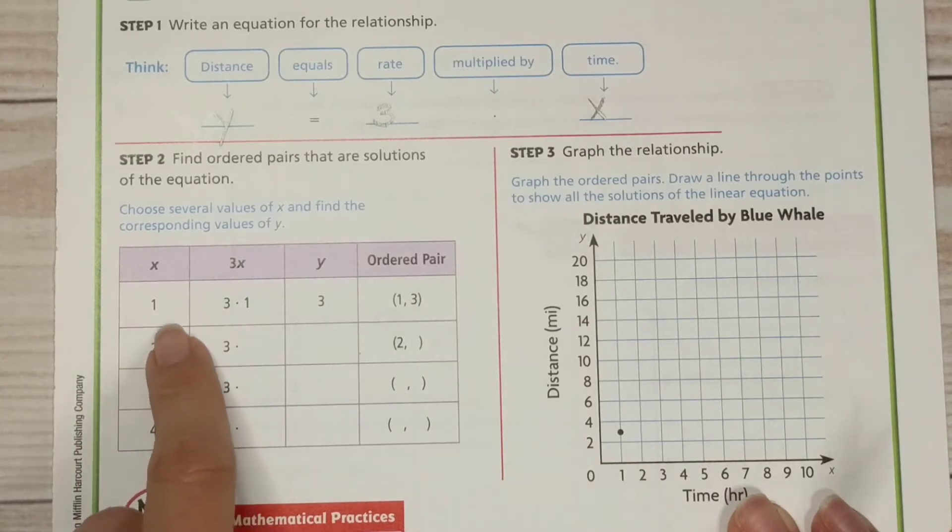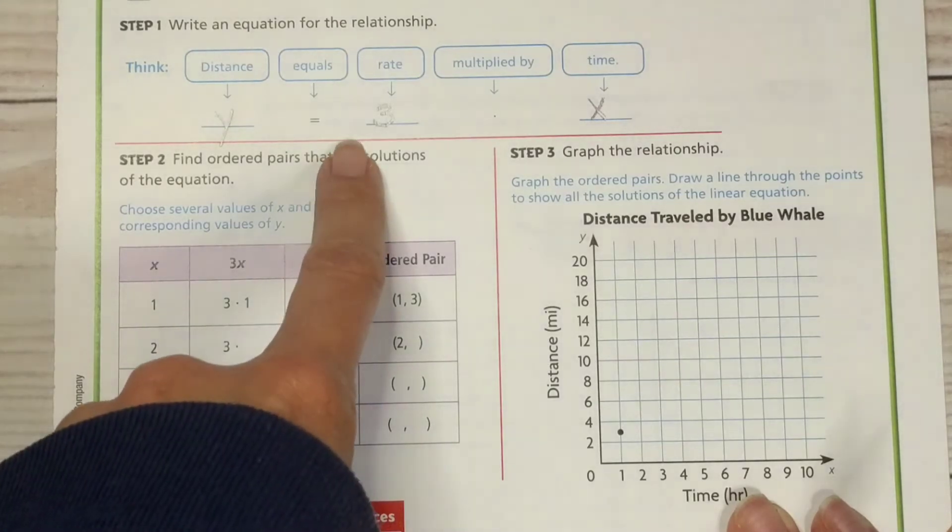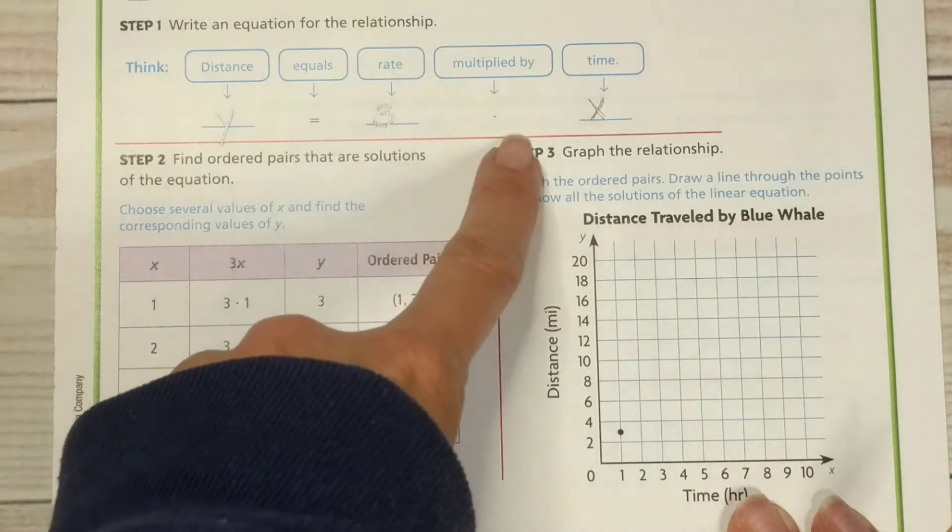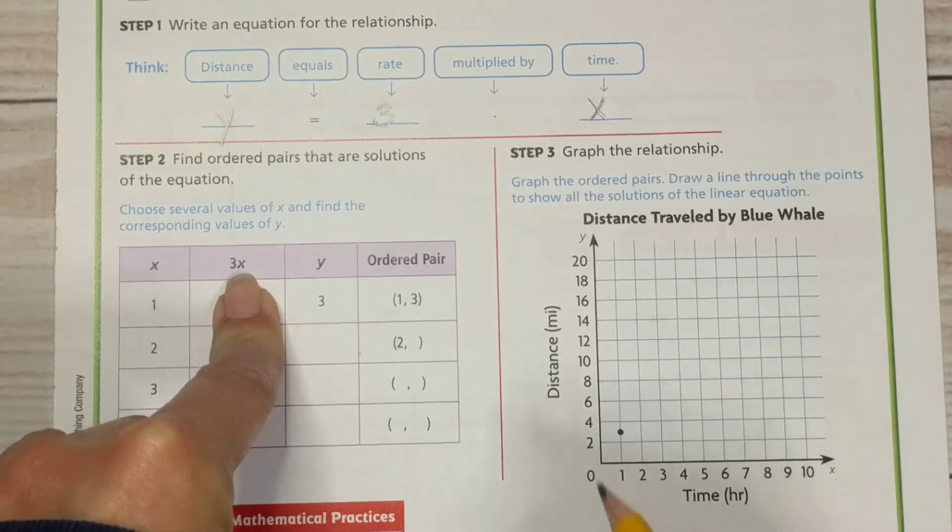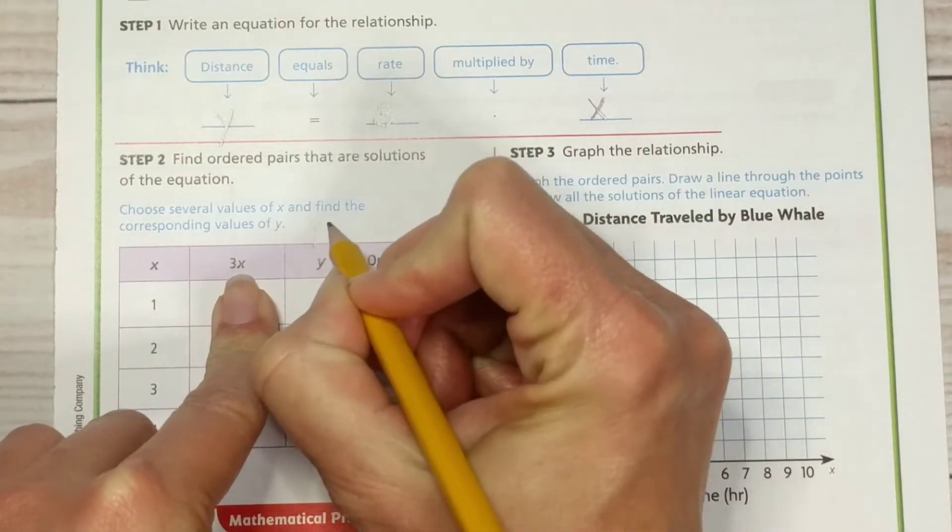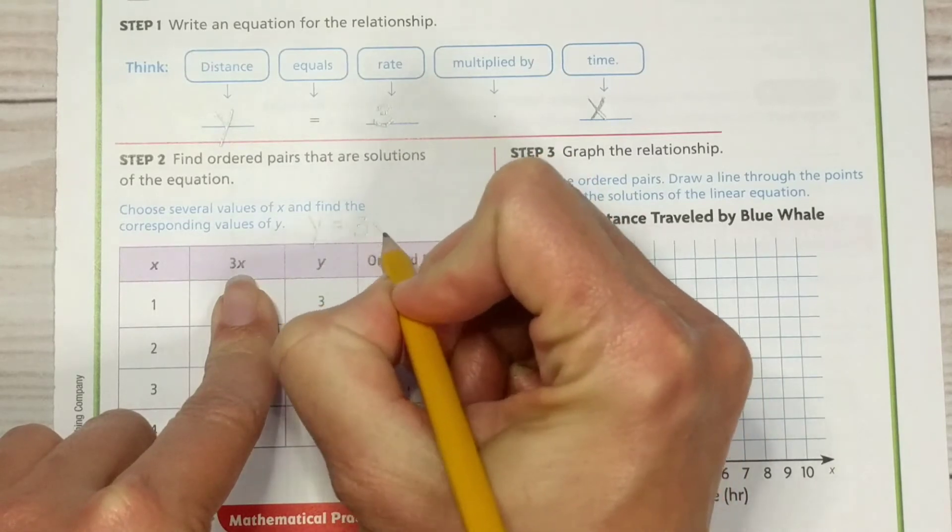Okay. So our x values are 1, 2, 3, and 4. Our equation that we created up here is written nicely right here. In fact, I'm going to rewrite it right here. y equals 3x.